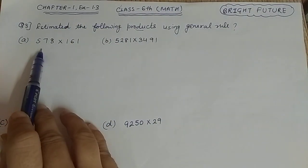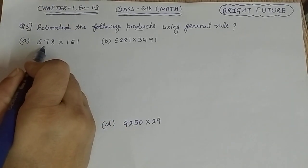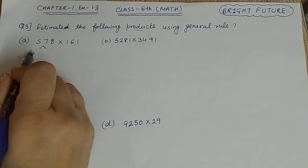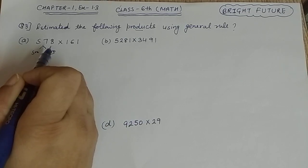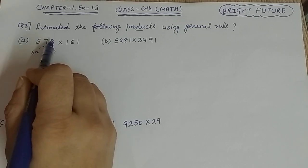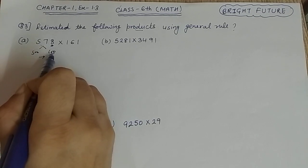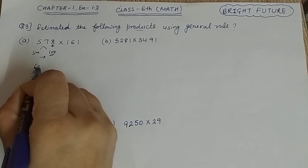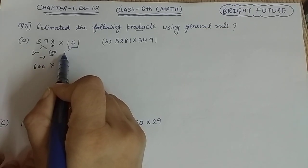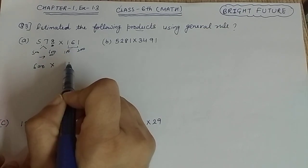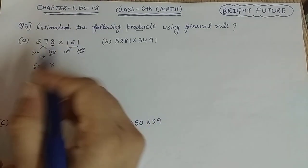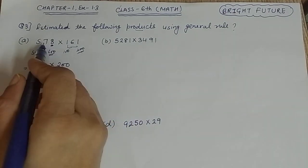Question three is we have to estimate 578 times 161. Estimate means we split numbers so our calculation is easy to do. If we split, 578 has 8 in the last unit place, so this will increase to the next side. It will become 600. And 161 is close to 200, so the estimate is 600 and 200.